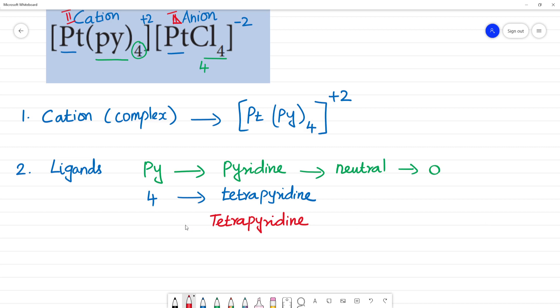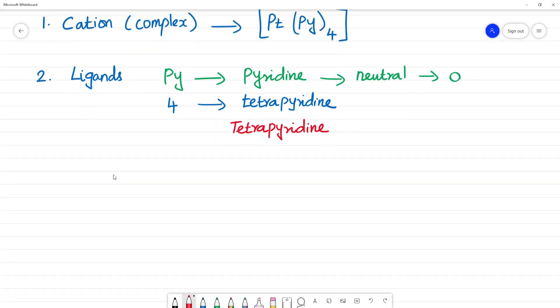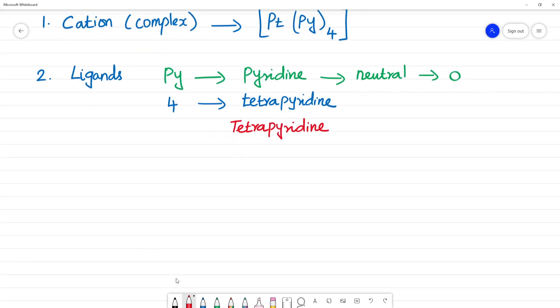Tetraperioden, we name the ligand. Next we look at the central metal atom. What is the central metal atom here? Pt. Platinum. Central metal atom, that is equal to Pt, Pt platinum. This is in what complex? This is in cationic complex.